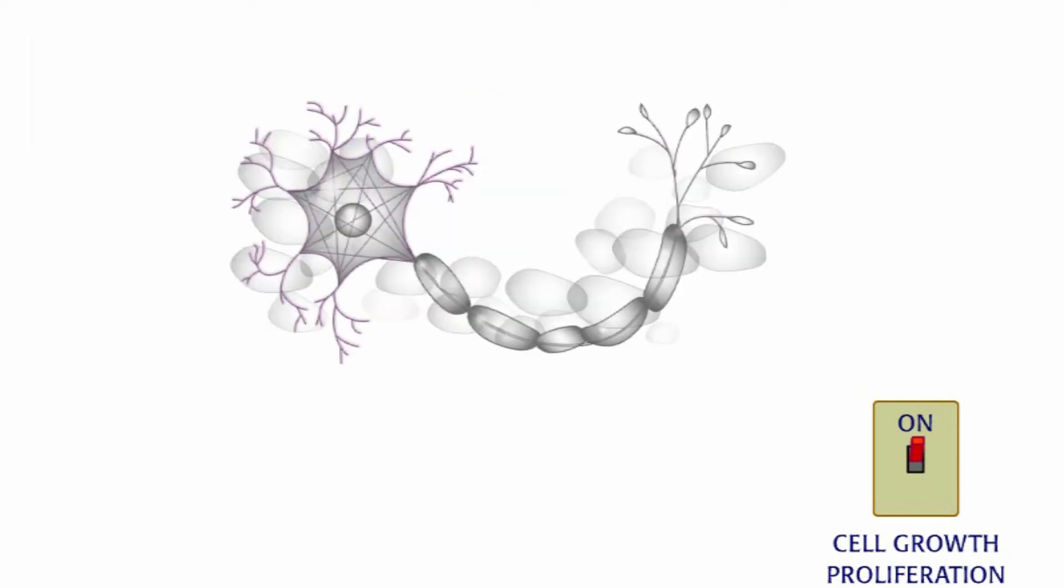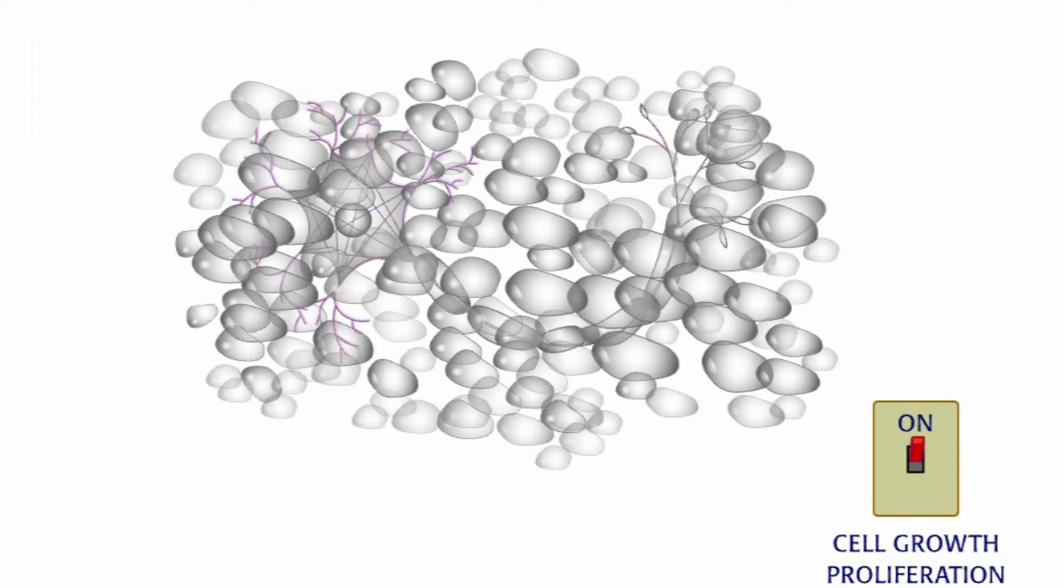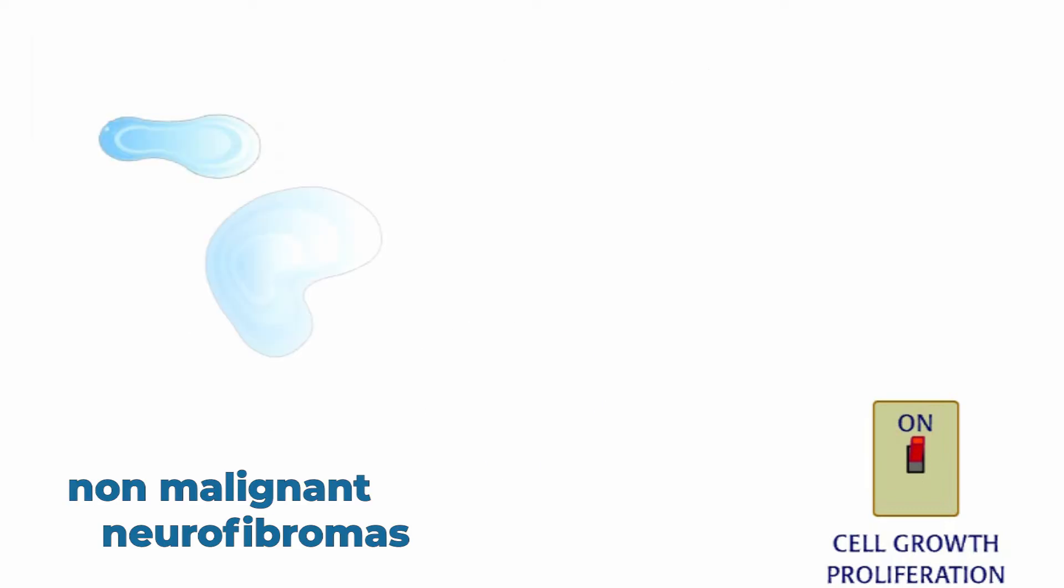Neurofibromin is not the only protein that can speed up the deactivation of RAS. However, in neuronal tissues, the lack of neurofibromin can lead to non-malignant neurofibromas.